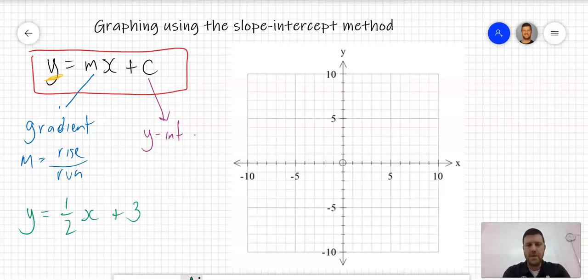As I said, the y-intercept or the constant term is our starting point. So I'm going to start on the y-axis at positive 3 because it's plus 3, which is here. Let's use the green pen for that. From that point, our gradient is 1 over 2, so that means a rise of 1 and a run of 2.